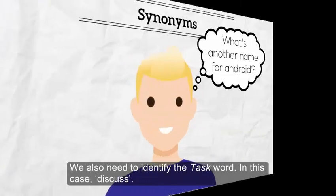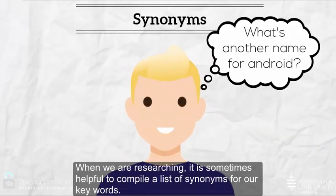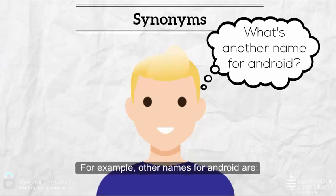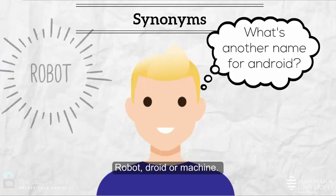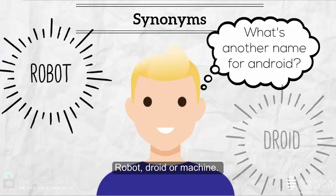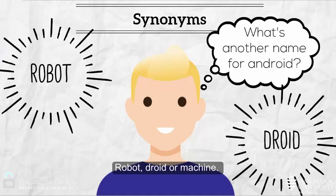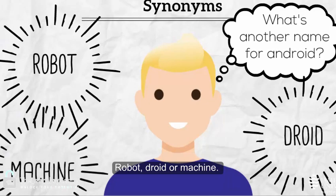When we are researching, it is sometimes helpful to compile a list of synonyms for our keywords. For example, other names for android are robot, droid or machine.